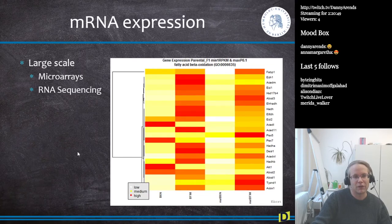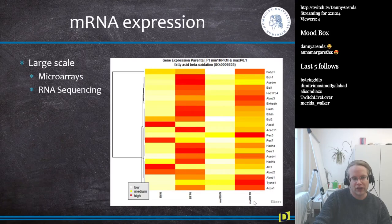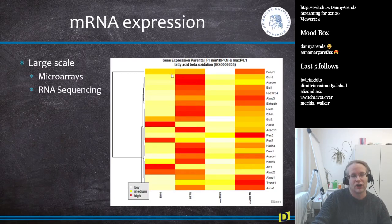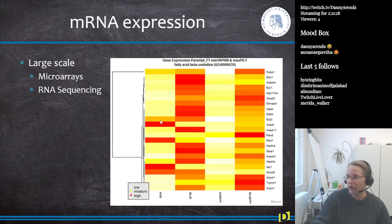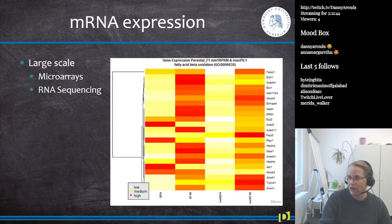For large-scale experiments you are forced to use microarrays, which measure hundreds or thousands of genes simultaneously, or RNA sequencing, which is untargeted. In RNA-seq you get reads which get mapped to the genome. What we want to see is, for example, a gene expression heatmap where we have different mouse samples — such as B6N reference mice and BFMI Berlin fat mice — and we identify genes that are highly expressed in the fat mouse but lowly expressed in the B6N mouse.